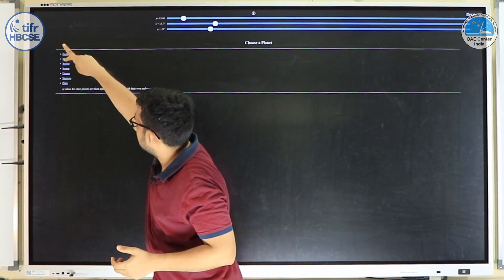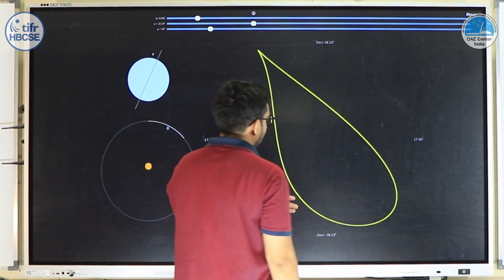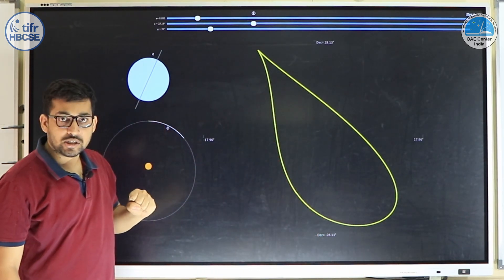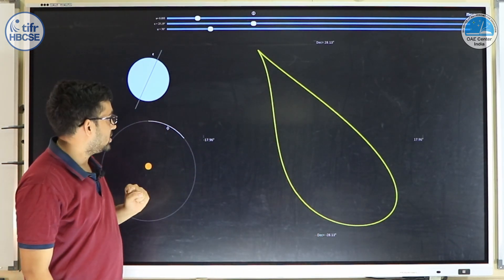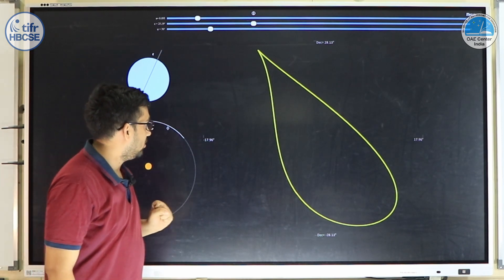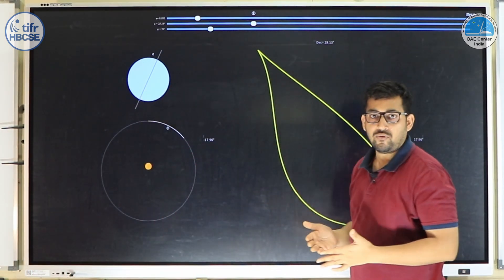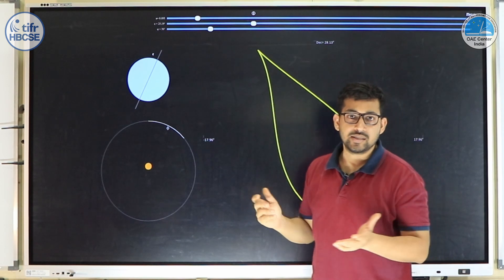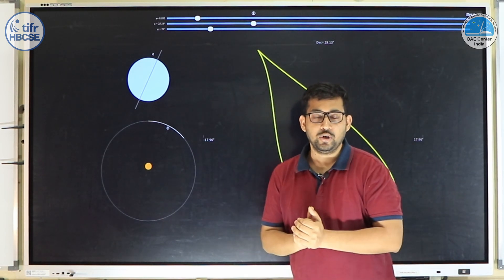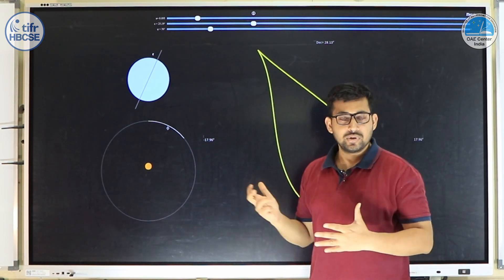The web page also allows you to switch to a different planet — for Mars, we again see the teardrop-like shape that was observed by the Mars Pathfinder, as shown in the initial videos. You can explore what happens when eccentricity is zero, when obliquity is very high, and so on, to understand how the equation of time and change in declination produce these different analemma shapes.